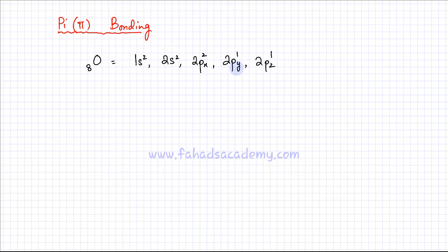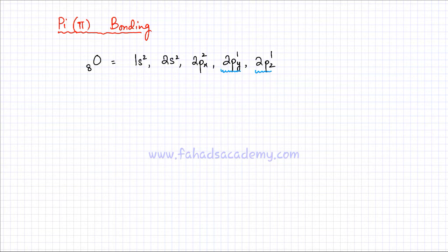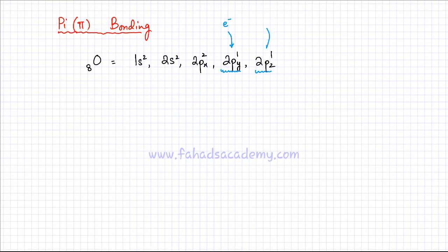I'm going to start off with an example and discuss oxygen first. If you look at the electronic configuration of oxygen, which has eight electrons, you would notice that it has two orbitals: one is the 2py and the other one is the 2pz orbital, which have incomplete orbitals, so they need one electron each. So, oxygen needs two electrons.